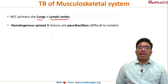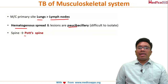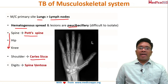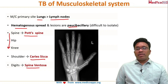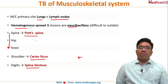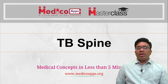To quickly revise: lungs greater than lymph nodes are the primary sites; the spread is hematogenous; the lesions are paucibacillary. The spine is called Pott's spine. Hip and knee follow in that order. In the shoulder it is caries sicca, and in the digits it is spina ventosa — featuring periosteal reaction, which does not happen with tuberculosis of the rest of the bones.